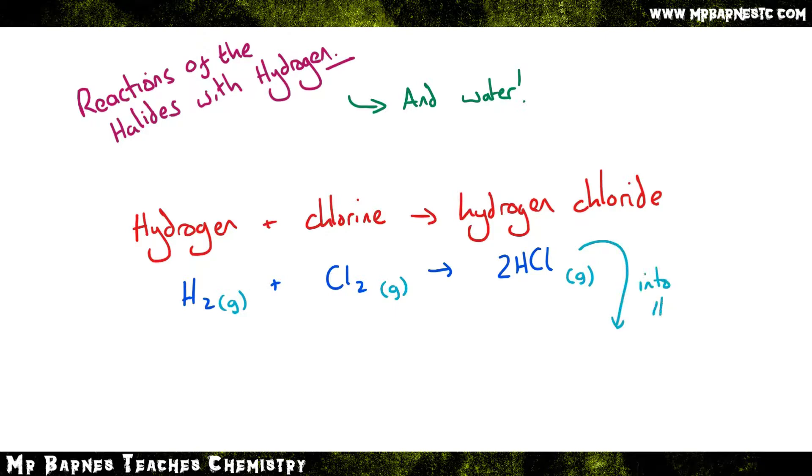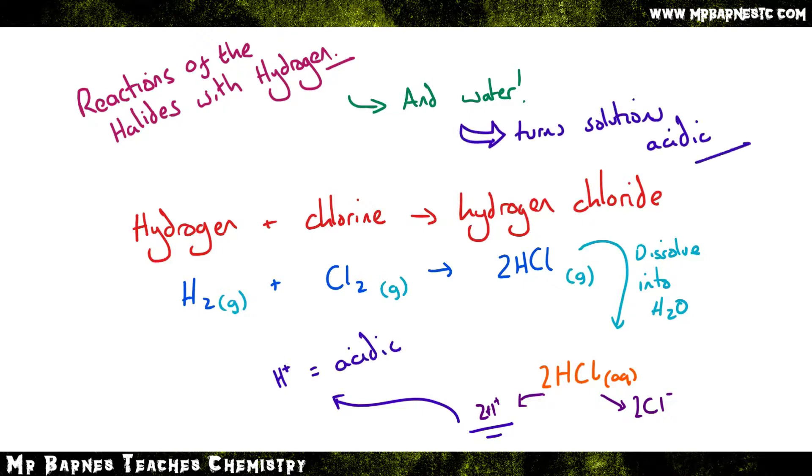Now if you take that and you dissolve it into H2O, into water, you get something that is aqueous, dissolved. And when something's aqueous, it dissociates, which means it splits up into its ions, which in this case is going to be 2Cl minus ions and 2H plus ions. Hopefully you should remember from the acids topic that the H plus ions are what makes something acidic. Therefore, if you dissolve any hydrogen halide into water, it turns the solution acidic.